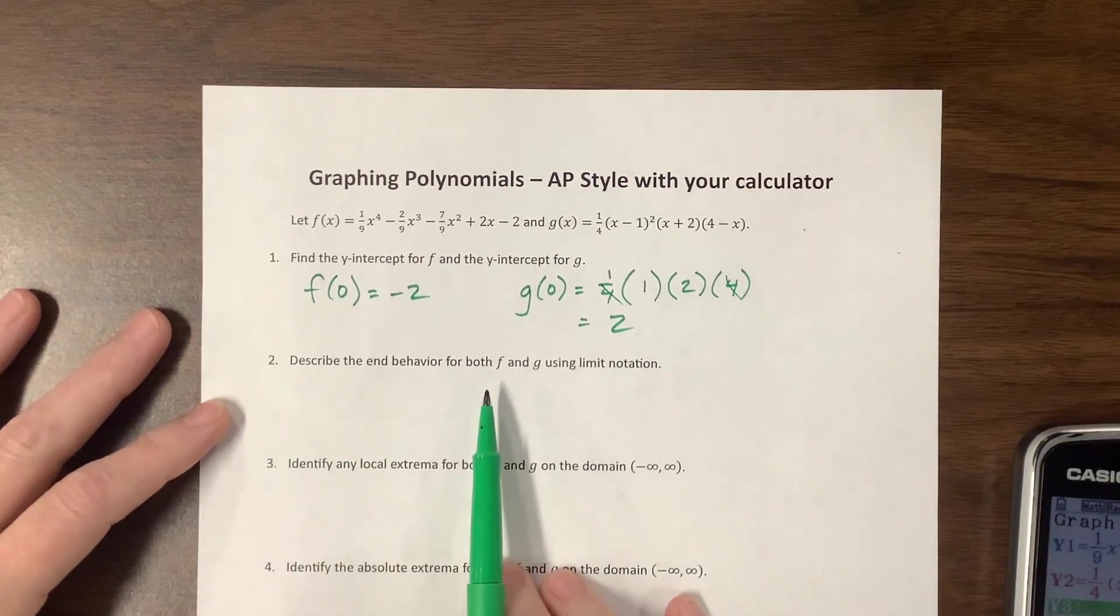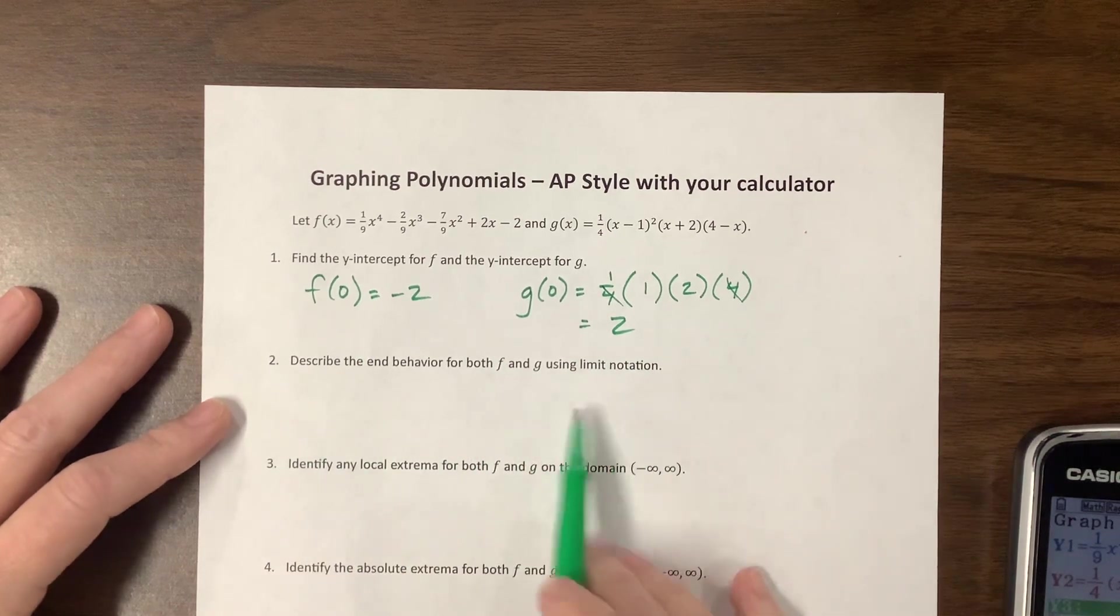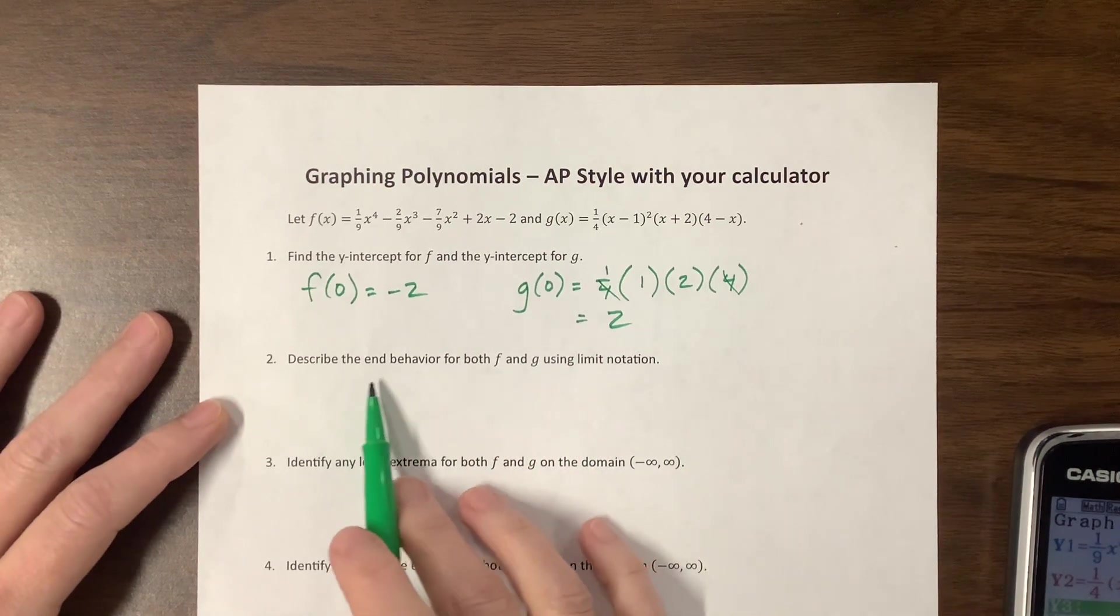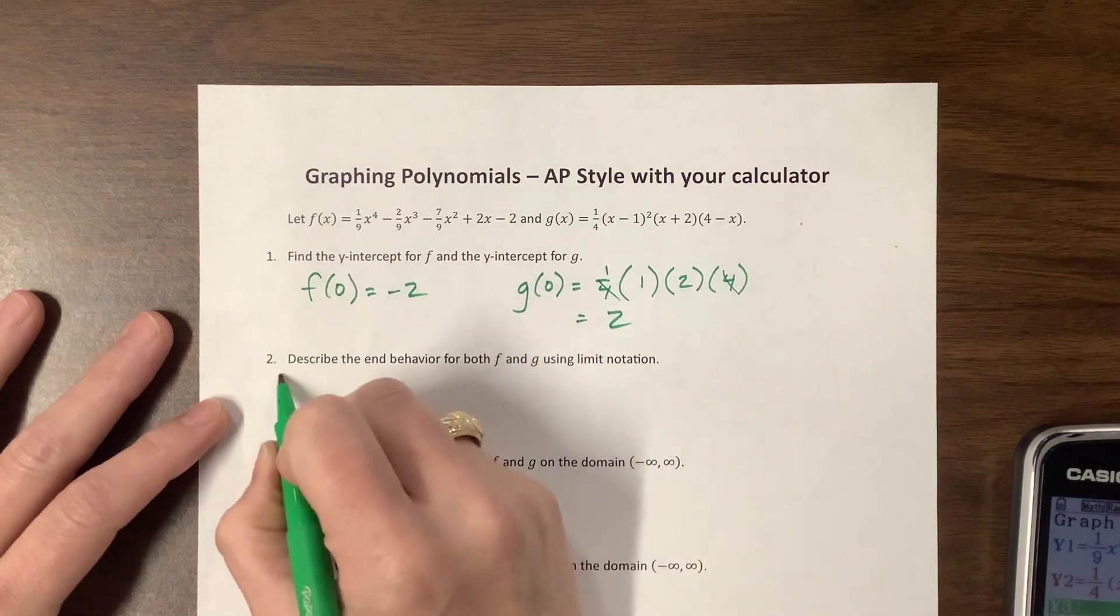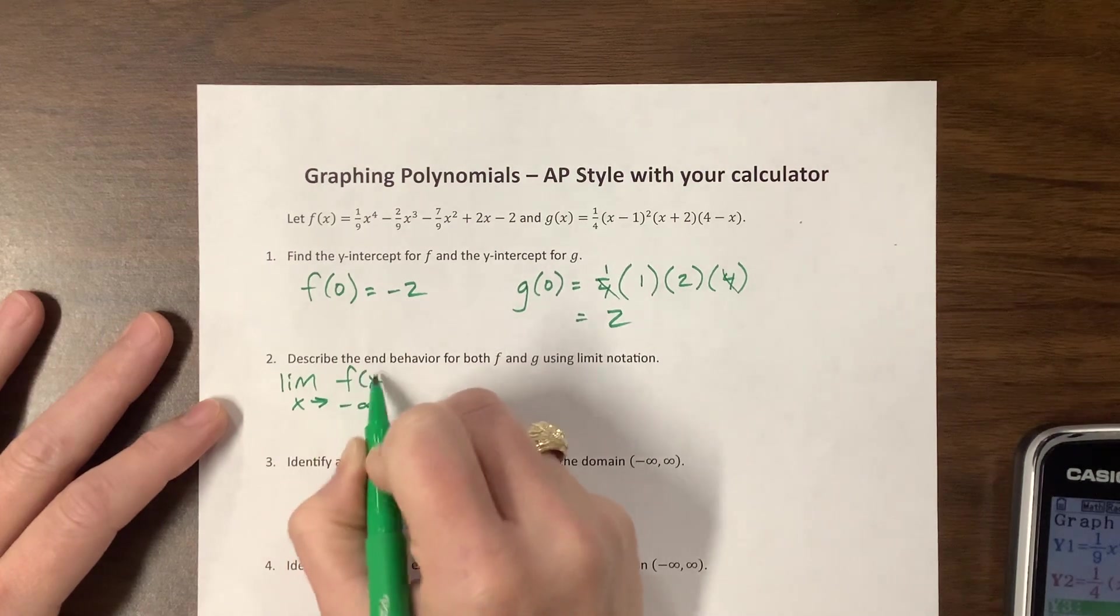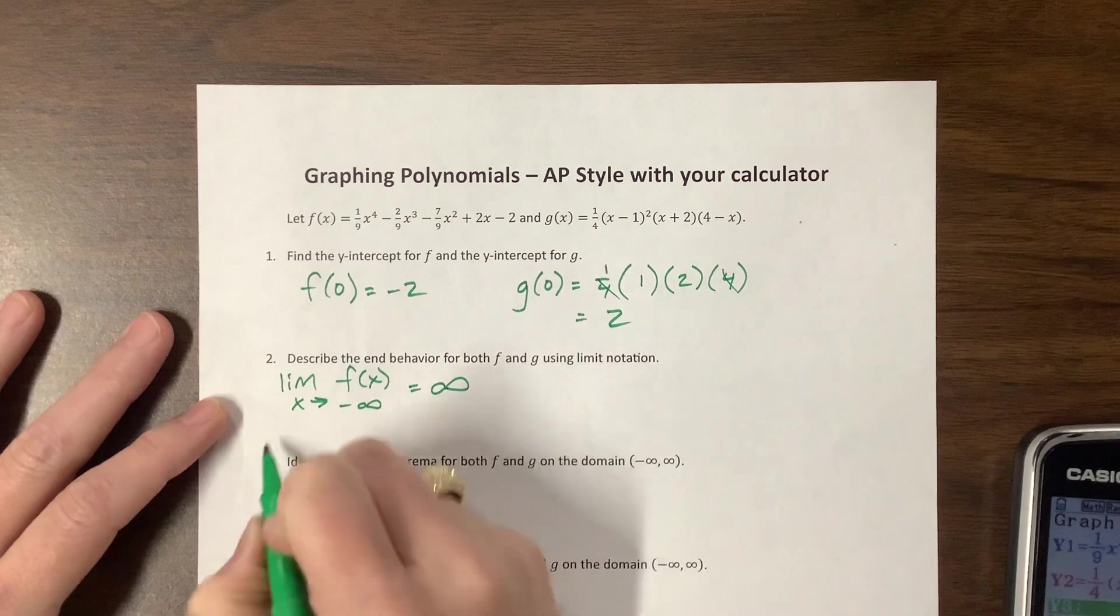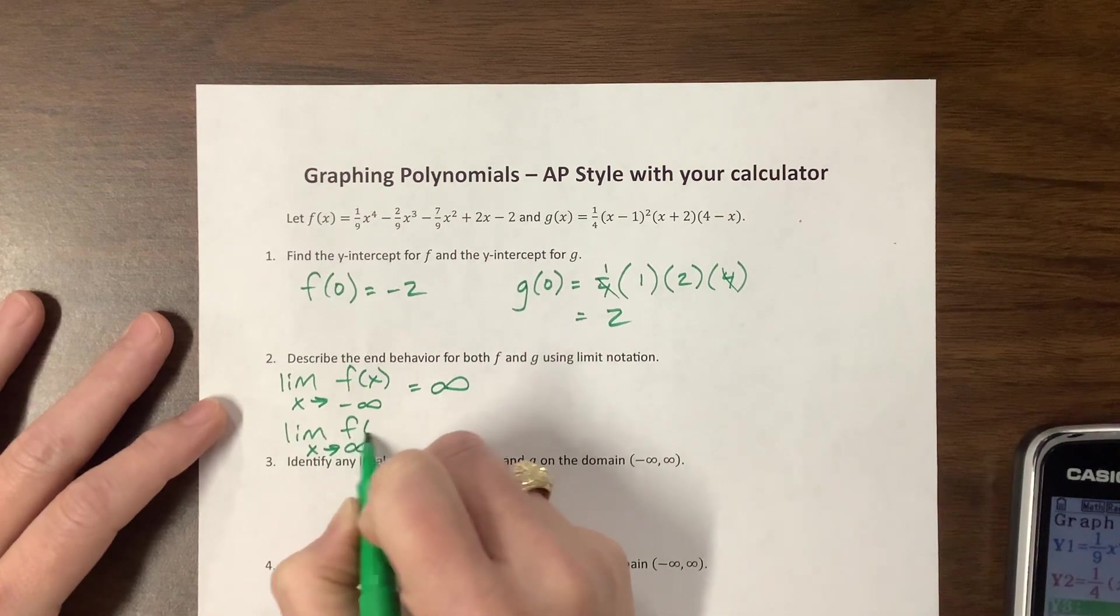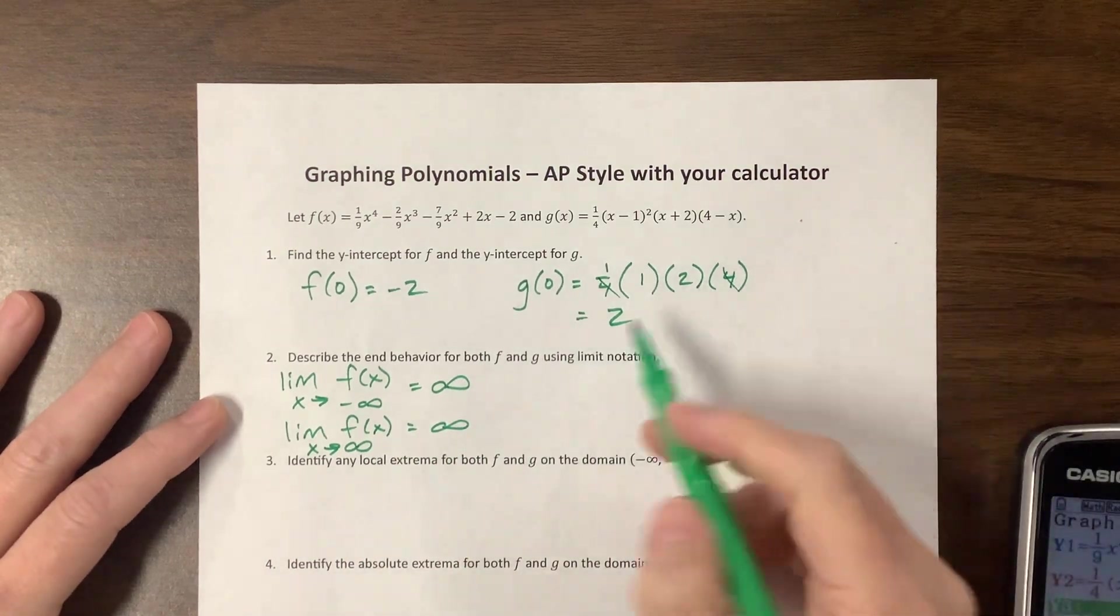It says describe the end behavior for both f and g using limit notation. So we could do end behavior without a calculator. On this one, its degree four, its leading coefficient is positive. That means the limit as x goes to negative infinity of f(x) is equal to infinity, since it's positive and even it's going to go to infinity in both directions.